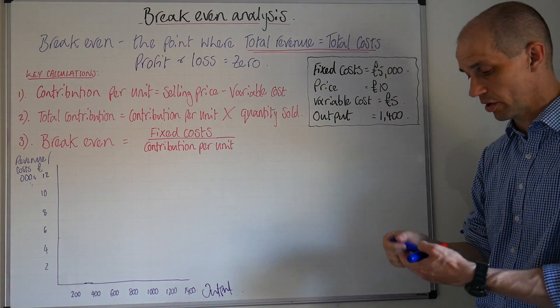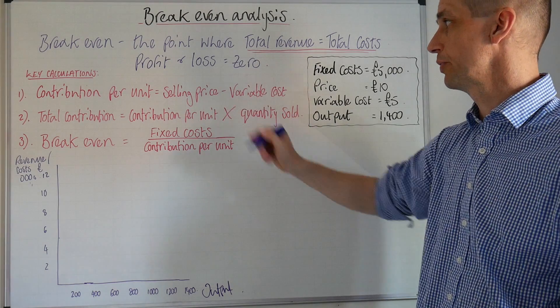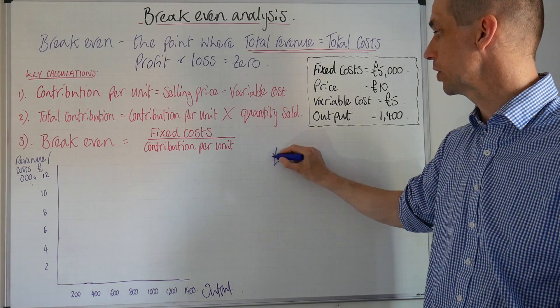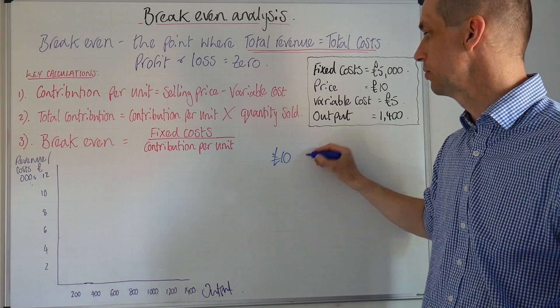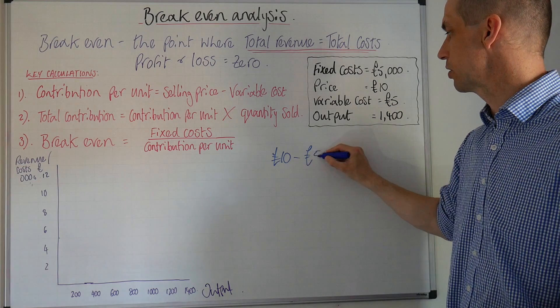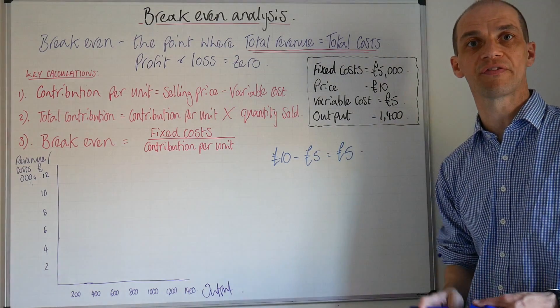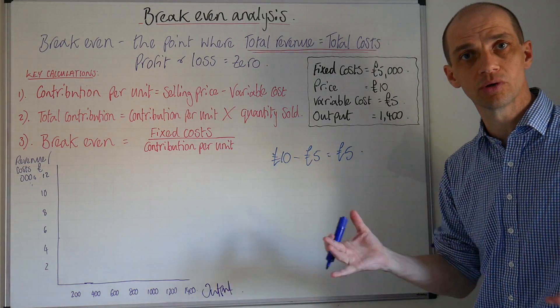If we want to work out our contribution per unit, we can see the price is £10 minus our variable cost which is £5. So that tells us that we are working to a unit contribution of just £5. Nice and simple, nice and straightforward.